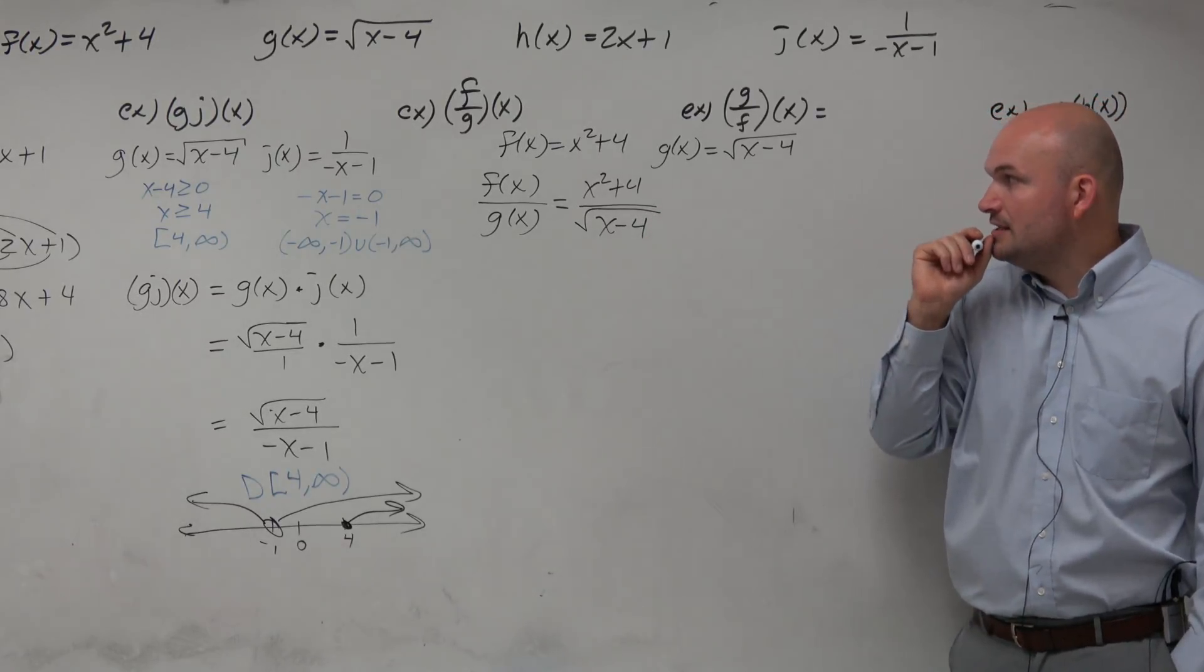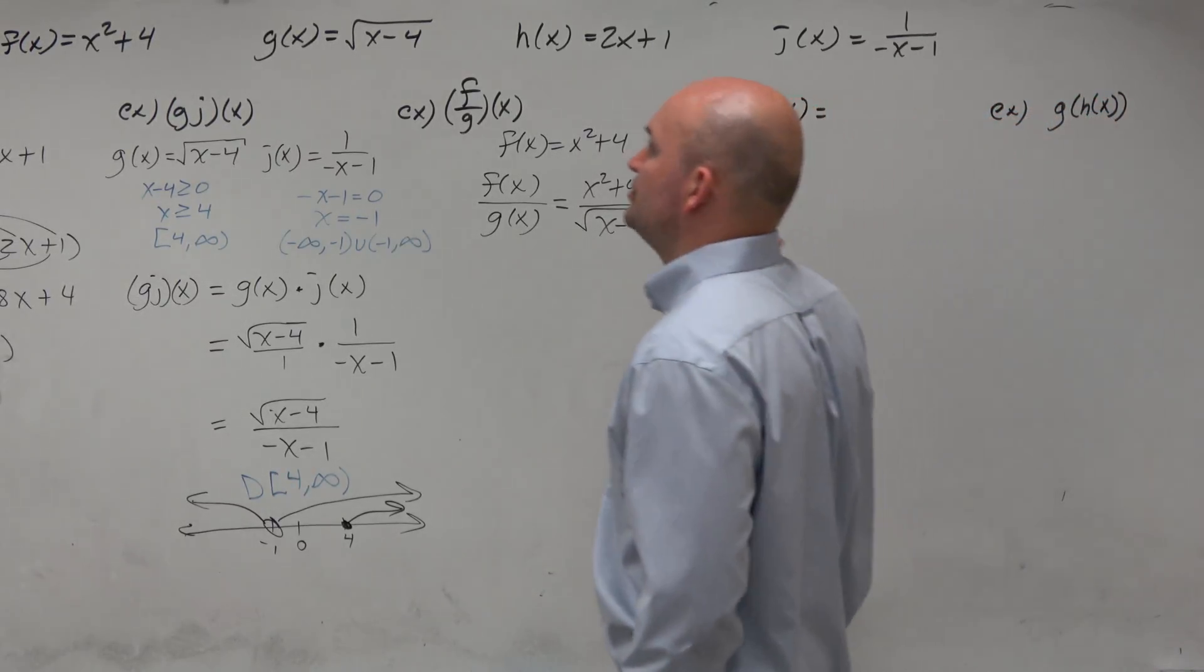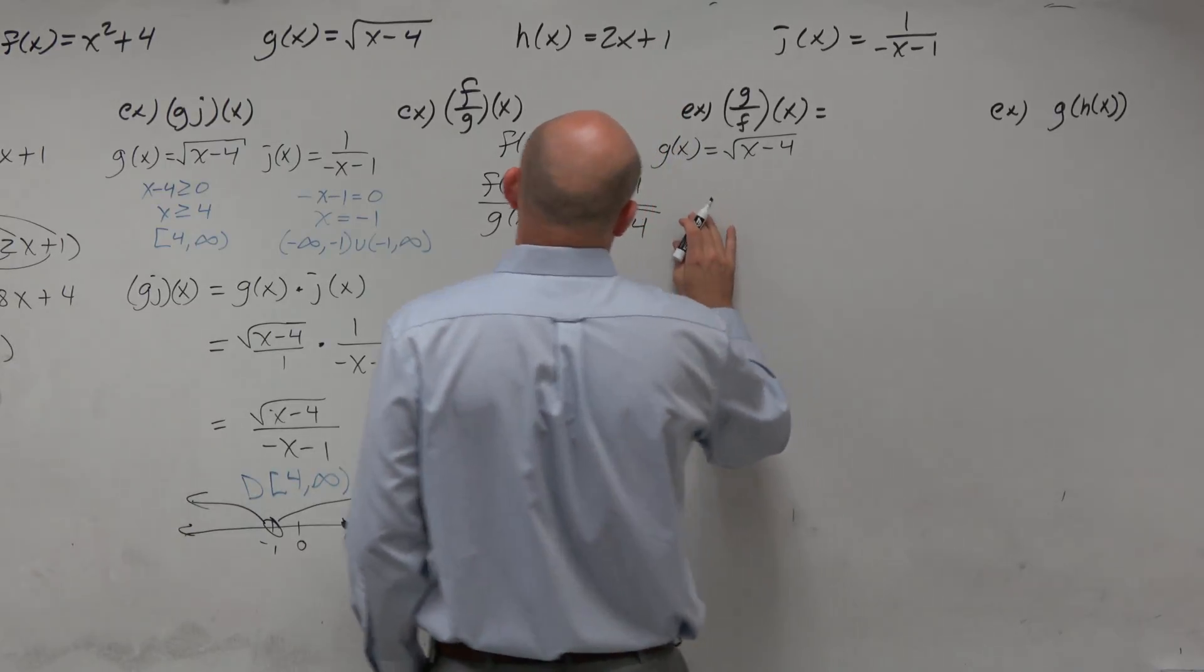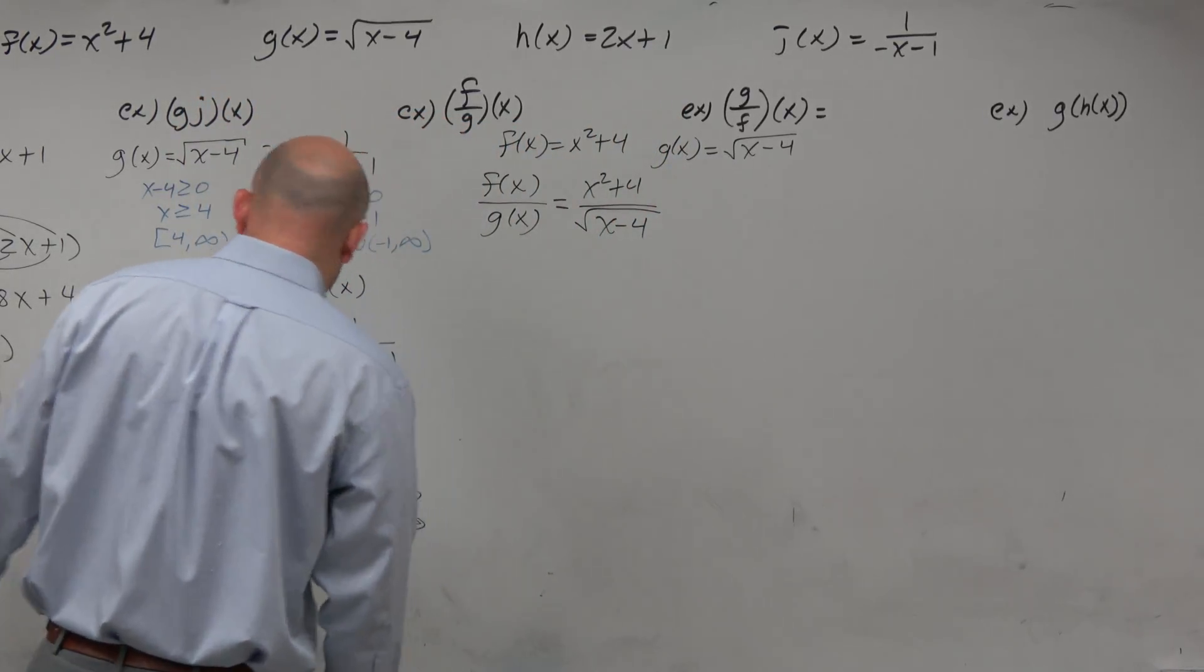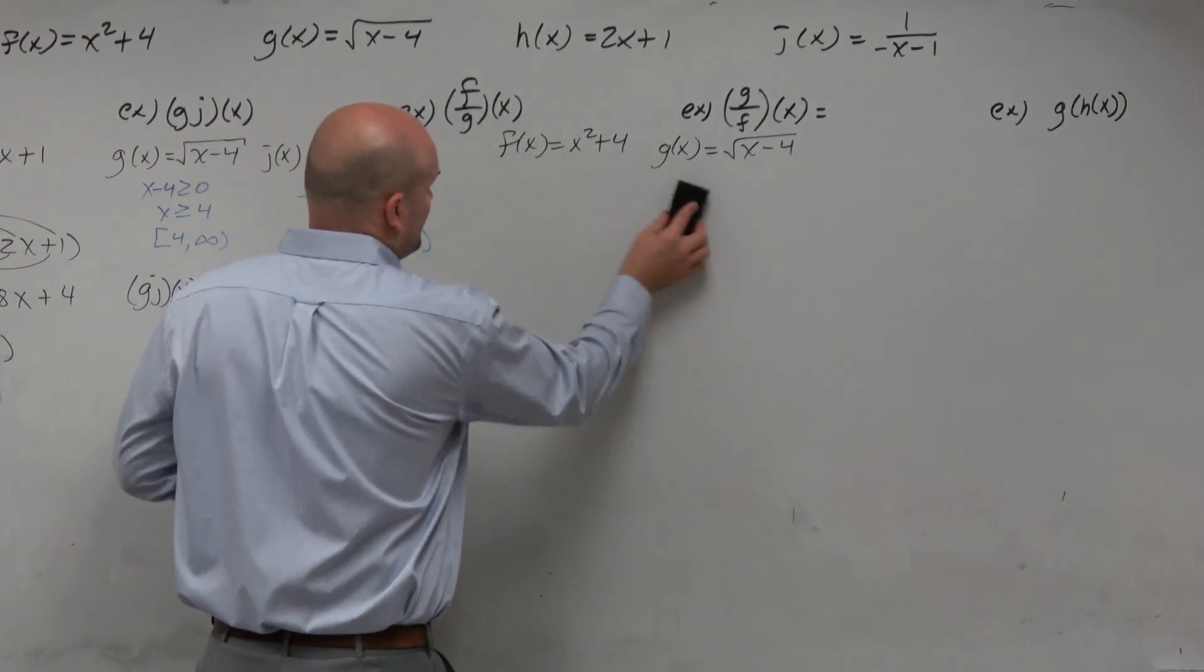So now we're looking at this, and we say, oh, wait. I'm doing g of x. Oh, OK. So we have some domain restrictions. Let's look at this. Let me actually rewrite this. Let's go and look at the domains of each of these first.